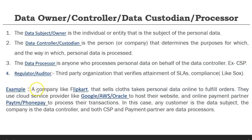Here's a brief example to help understand these roles. A company like Flipkart, which sells clothes, takes personal data online to fulfill your orders — length, width, gender, and other details. They use a cloud service provider like Google Cloud, AWS, or Oracle Cloud to host their website or application, and they use online payment partners like Paytm, PhonePe, or Google Pay to process transactions. In that case, I am the data subject and data owner. Flipkart is the data controller. The CSP and payment partners are the data processors — they process data on behalf of the controller.